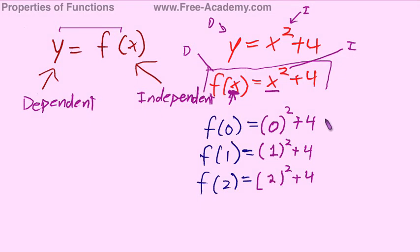So 0, 1, and 2. Well, 0 squared equals 0. If you add 4, then you get 4 back out. 1 squared equals 1 plus 4 equals 5. And 2 squared equals 4 plus 4 equals 8.